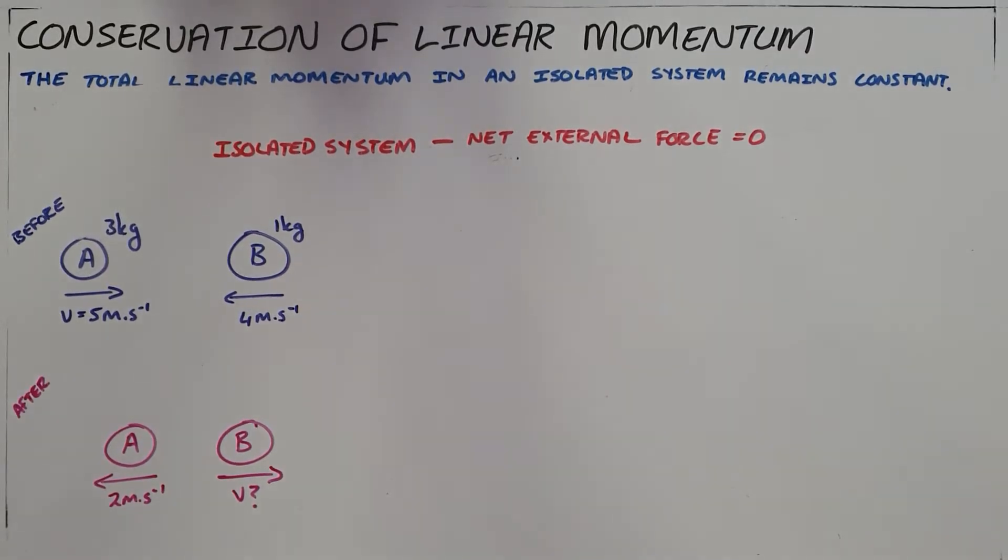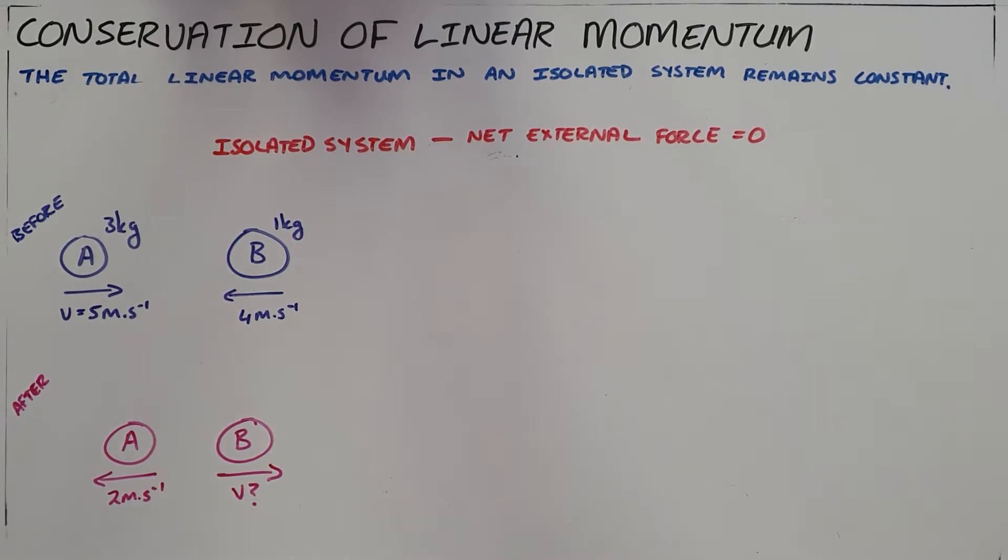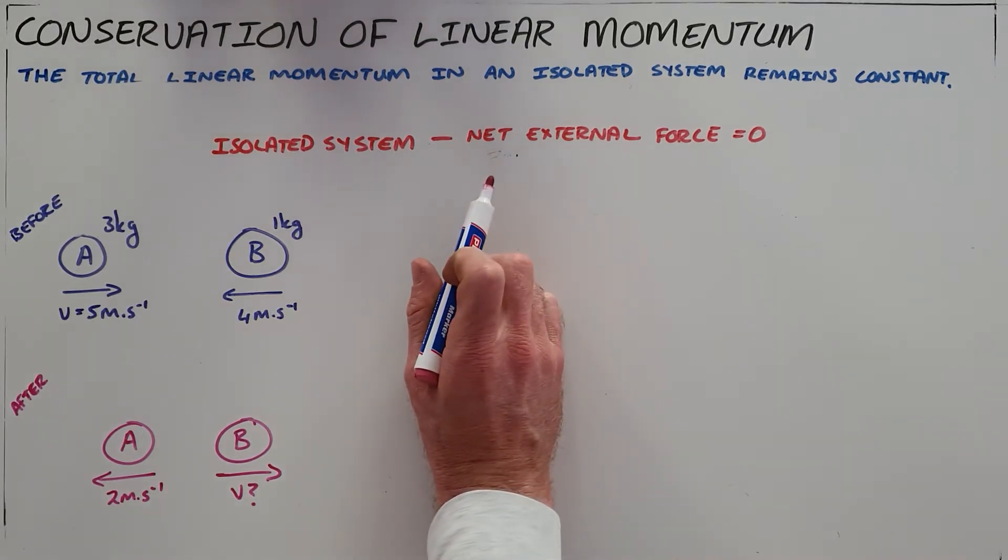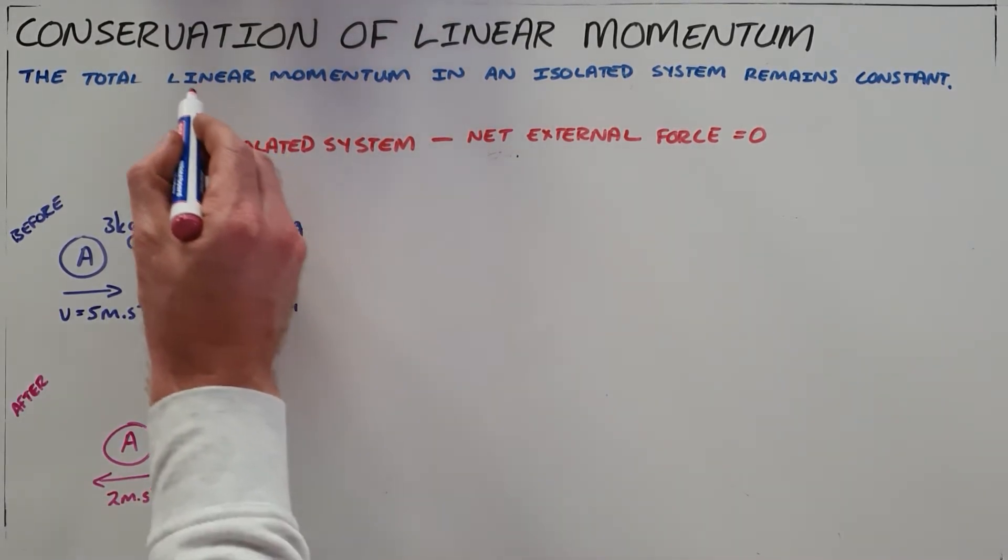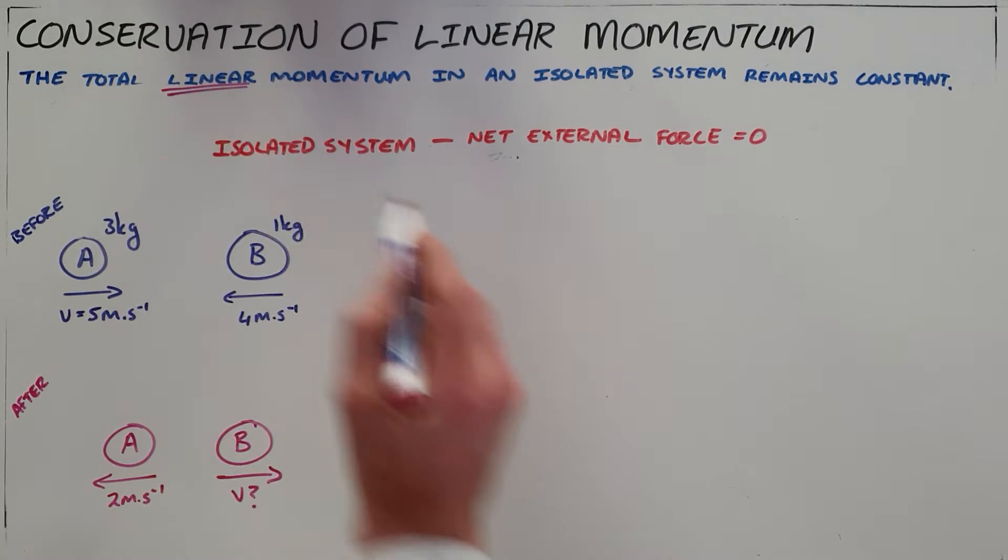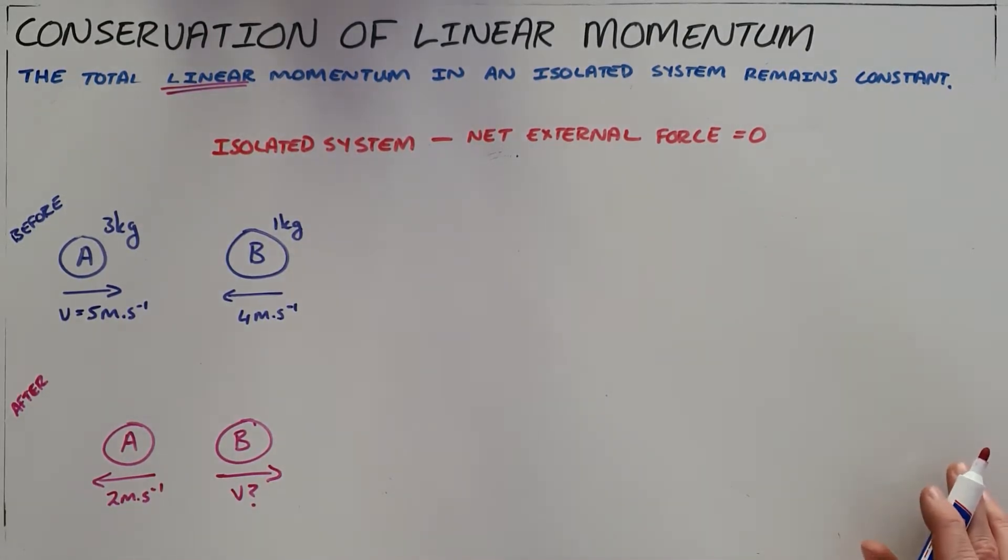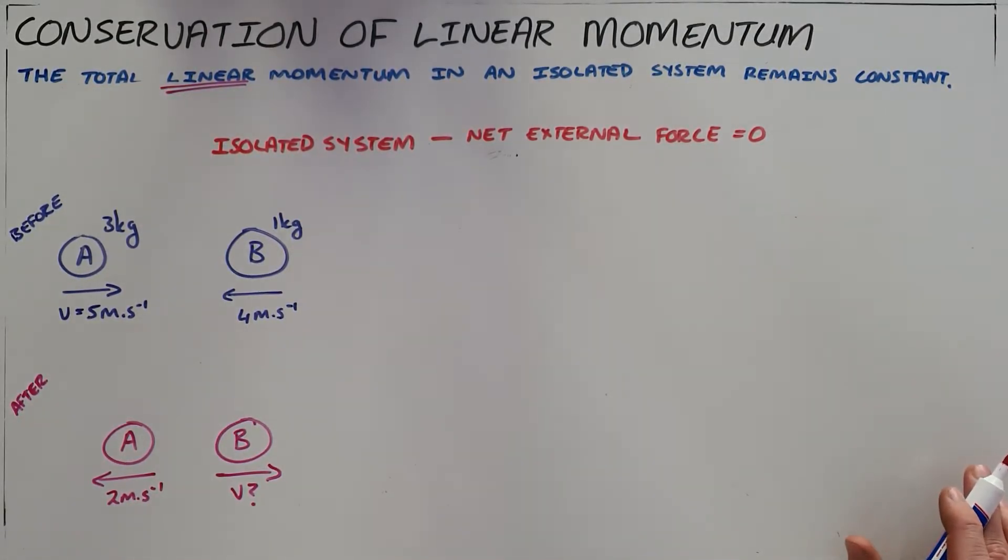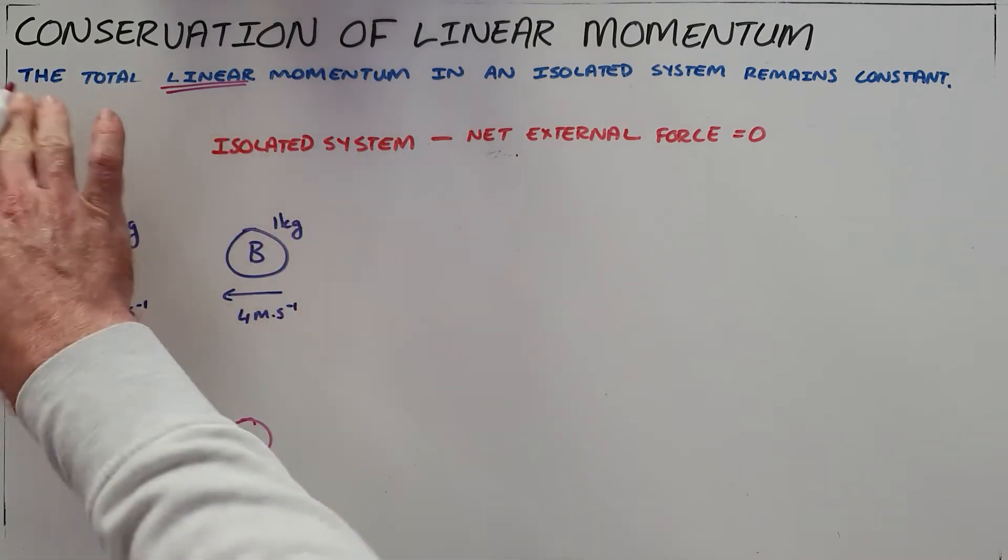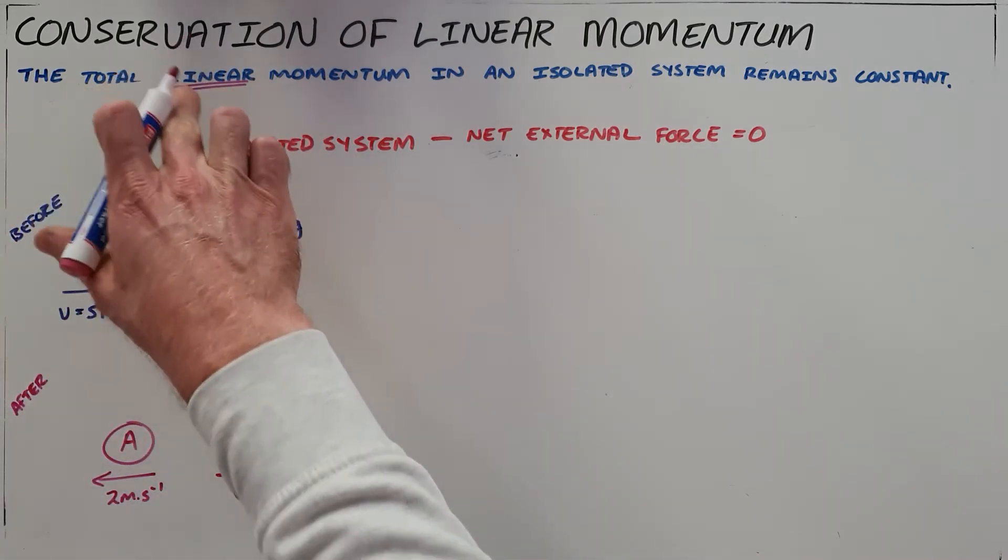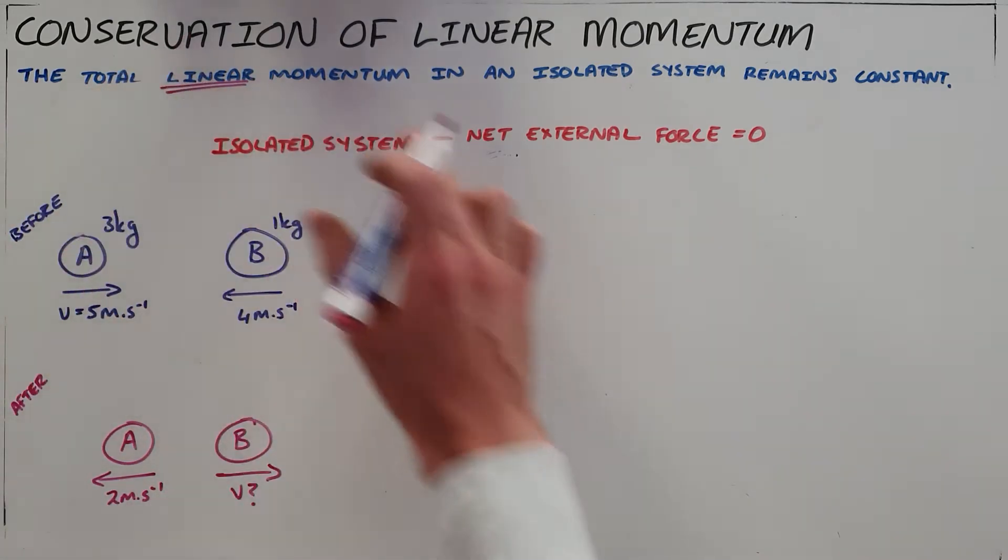The principle of conservation of linear momentum states that the total linear momentum in an isolated system remains constant. Firstly, it's very important to specify that it is linear momentum. We know that there is such a thing as angular momentum and that is not always conserved, which is why in our definition we must specify that it is the total linear momentum.